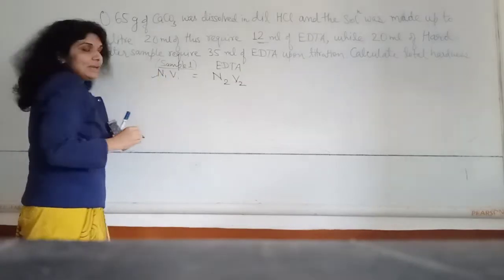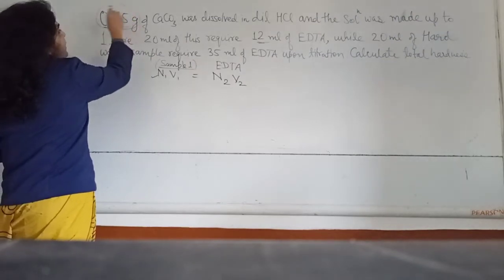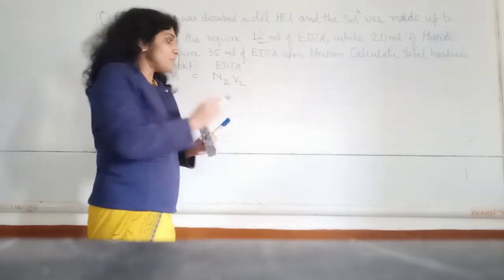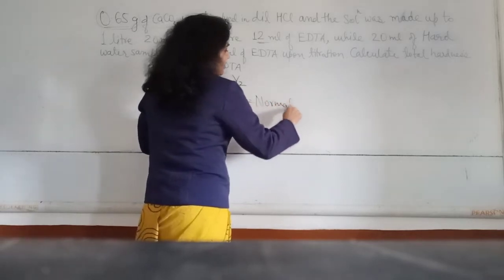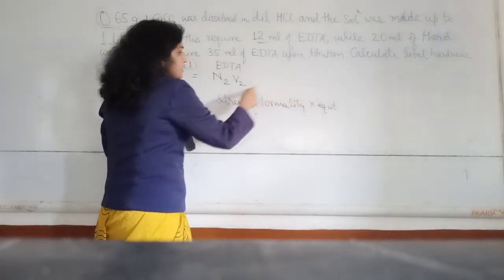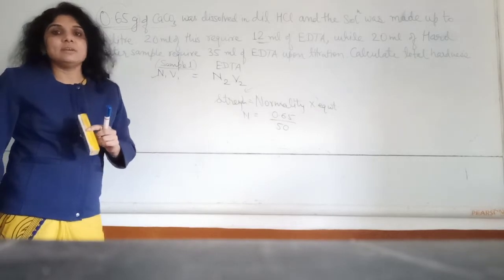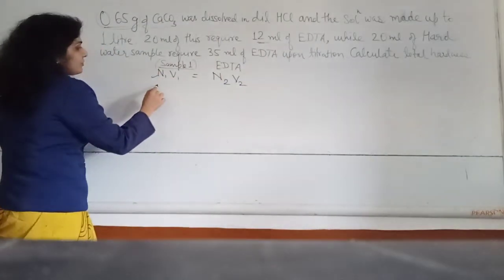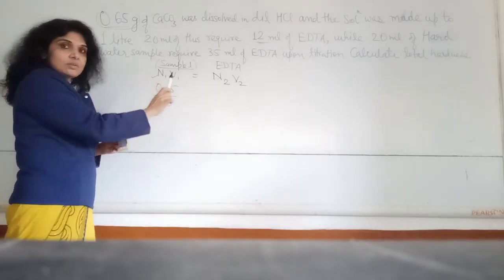Now we need the normality of Sample 1. Normality is not directly given. We use the formula: Strength = Normality × Equivalent Weight. So Normality = Strength ÷ Equivalent Weight. The strength is 0.65 g/L and the equivalent weight of CaCO3 is 50. So Normality = 0.65 ÷ 50 = 0.013 N. We keep this value as the normality of Sample 1.